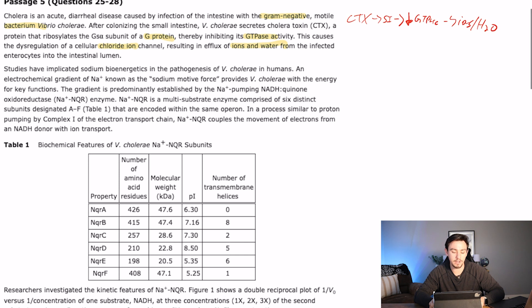So studies have implicated sodium bioenergetics, whatever that is, in the pathogenesis of V cholera in humans. An electrochemical gradient of sodium known as the sodium motive force provides cholera with the energy for key functions. So I'm just going to make a note of this because it's weird. So I have SMF is equal to the energy. So that's the energy for this. So sometimes I'll make a note of things, and then I'll go back and put them where they belong in the flowchart.